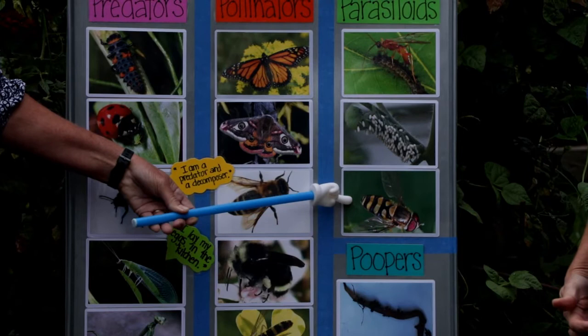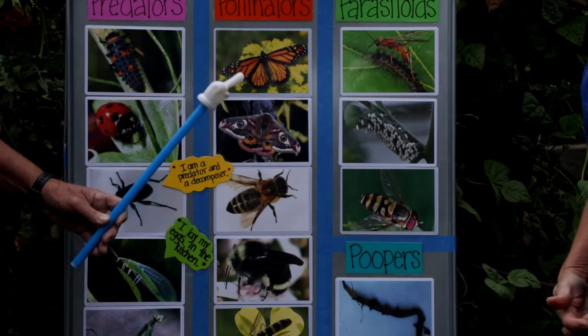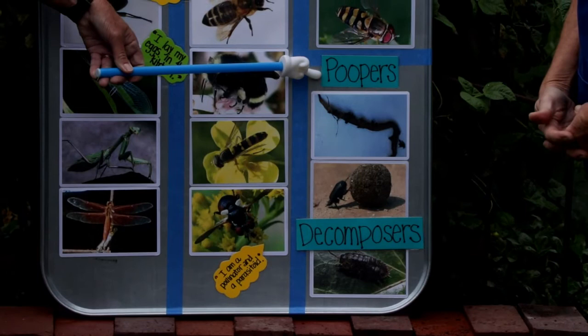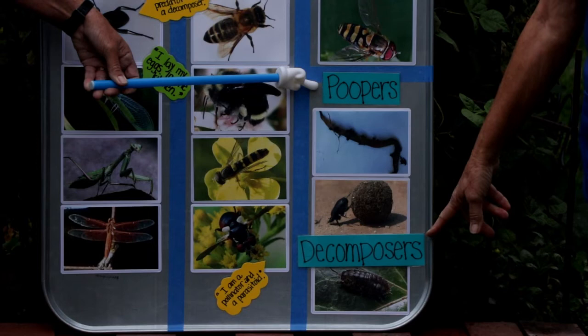This is a tachnid fly — they also pollinate and lay eggs on harmful insect larvae. So we've had three P's so far: predators, pollinators, and parasitoids. And the fourth are the poopers — the fancy name for poopers is decomposers.